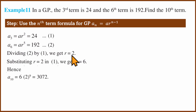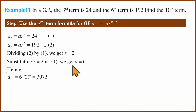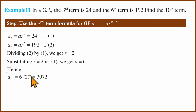Now we substitute r equals 2 back into equation 1. We have a multiplied by 2² equals 24, so a multiplied by 4 equals 24, giving a equals 6. Hence, with a equals 6 and r equals 2, the 10th term is 6 multiplied by 2 to the power 9, which equals 3072.